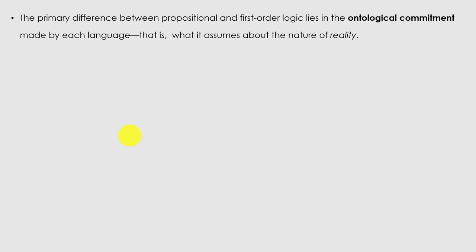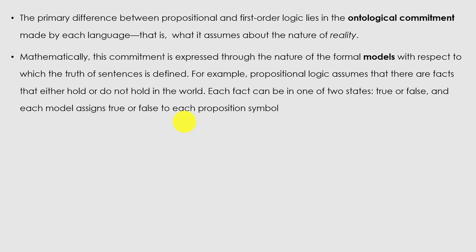The primary difference between propositional and first-order logic lies in the ontological commitment made by each language — that is, what it assumes about the nature of reality. Mathematically, this is expressed through the nature of formal models with respect to which the truth of sentences is defined. Propositional logic assumes there are facts that either hold or do not hold in the world; each fact can be in one of two states: true or false. In first-order logic there can be logical and propositional statements from which we can differentiate objects, properties, and relations.